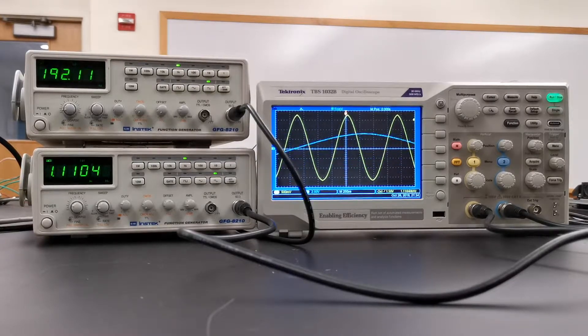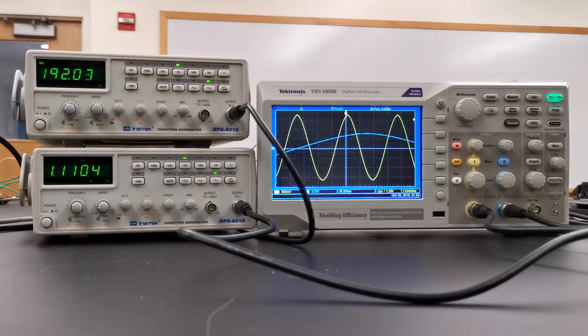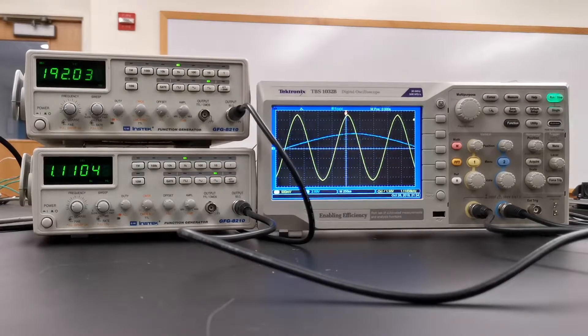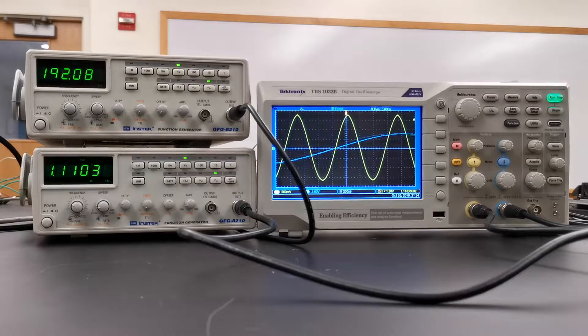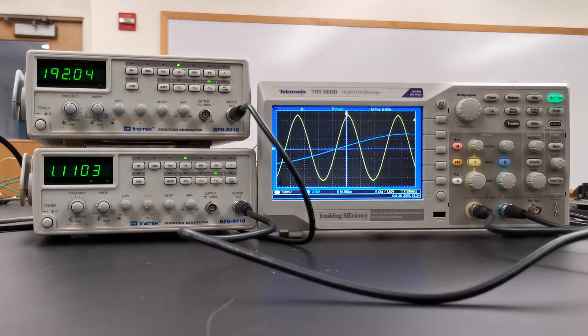So how do we set up the scope? Here we will set up two function generators, one for each channel, using BNC to BNC cables to connect them to the scope.